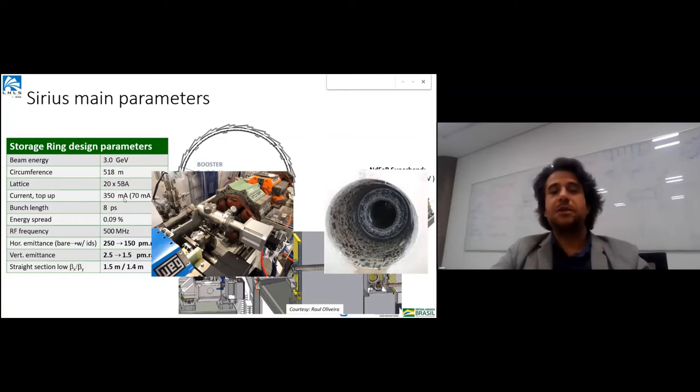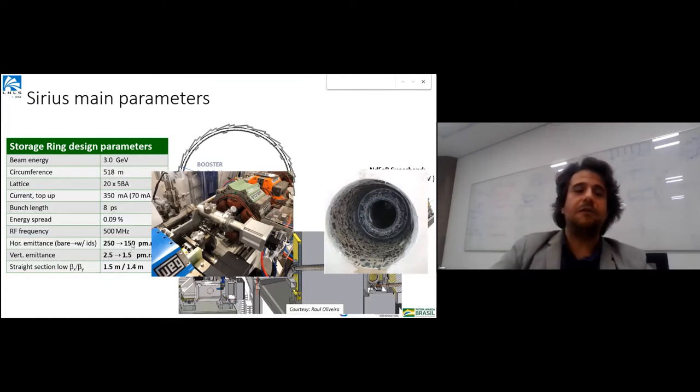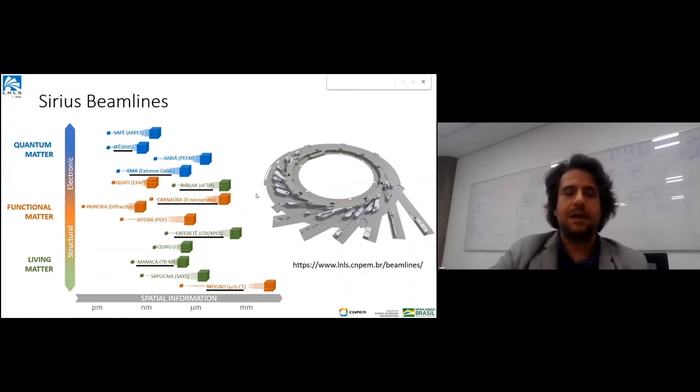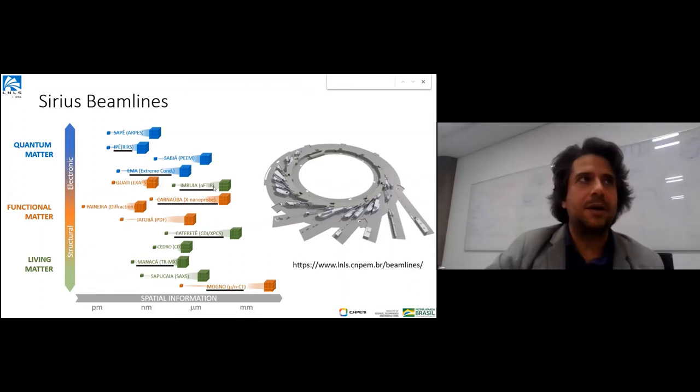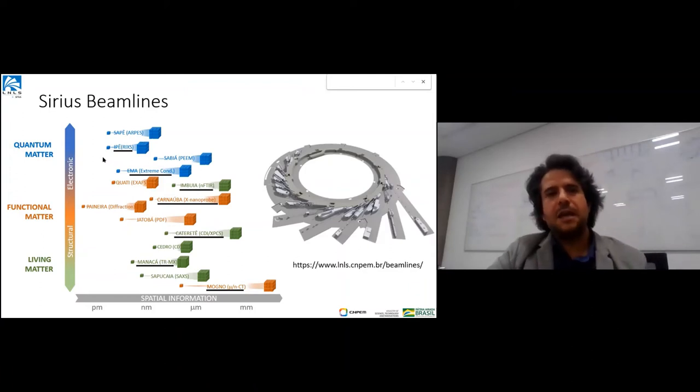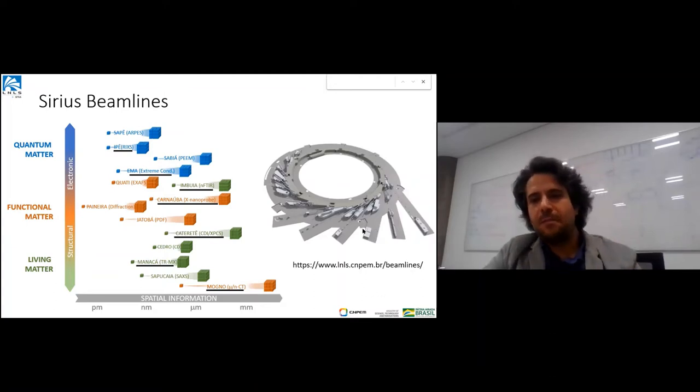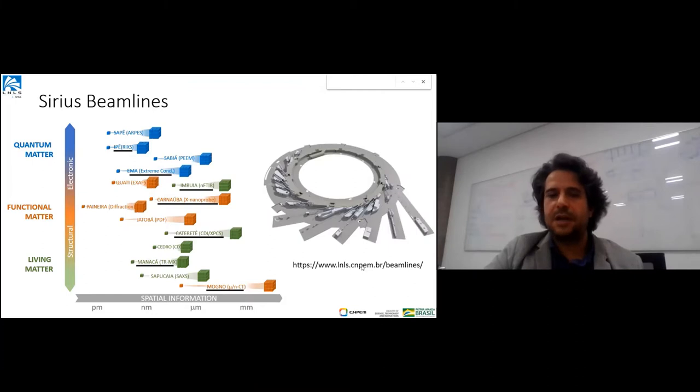The lattice is a five-band acromat. We expect to reach 350 milliamp, currently at 70 milliamp. The emittance is about to reach 150 picometer radian as we install the undulators. This is the set of beamlines for the first two phases of installation. I'll focus on the scientific opportunities we hope to find in this new light source.